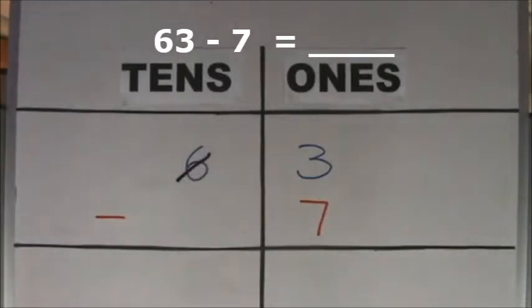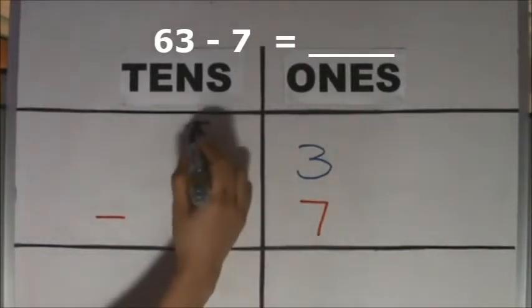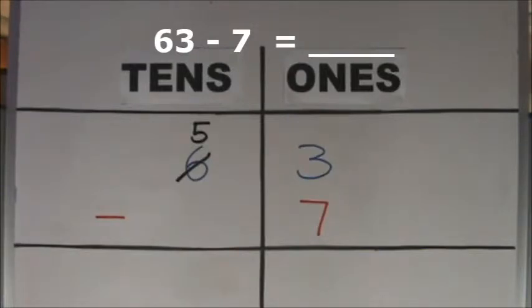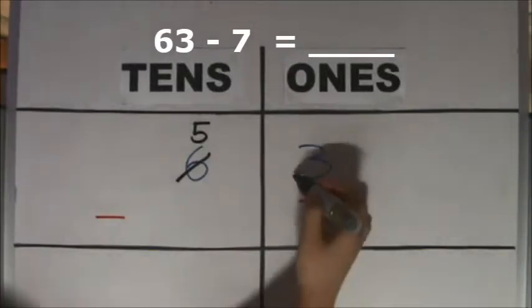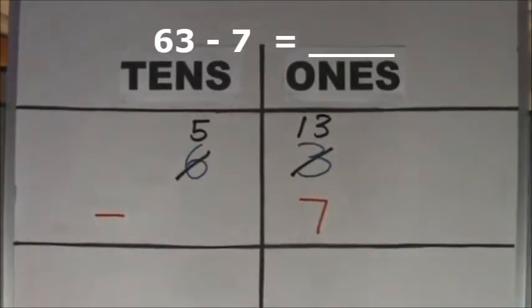How many tens do we have left? We have 5 tens left. How many ones do we have now? 10 and 3 make 13. We have 13 ones now.